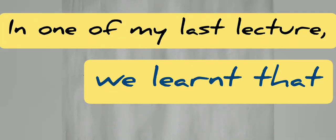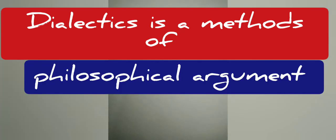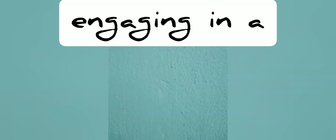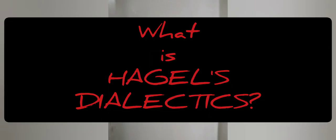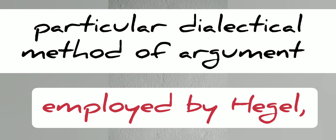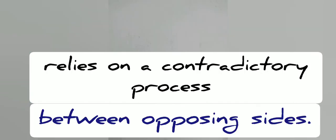In one of my last lectures, we learned that dialectics is a method of philosophical argument involving opposing ideas. It is a system of reasoning, arriving at the truth by engaging in a logical exchange of contradictory ideas. Then what is Hegel's Dialectics? Hegel's Dialectics is the particular dialectical method of argument employed by the 19th century German philosopher Hegel, which, like other dialectical methods, relies on a contradictory process between opposing sides.